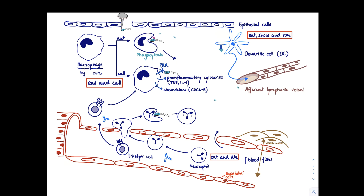Once the dendritic cell has found the lucky naive T cell whose receptor matches its peptide, that naive T cell will get activated and clonally expand — making thousands of copies of that specific T cell. Now we have an activated, effector T cell. There are two different types: CD4 or CD8. For an extracellular bacterial infection, we mainly get CD4. So let's say this is a CD4 T cell — all the daughter cells will be CD4 effector T cells, which we said before are T helper cells.